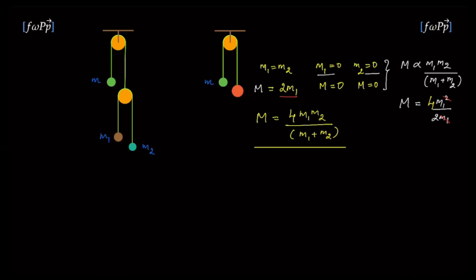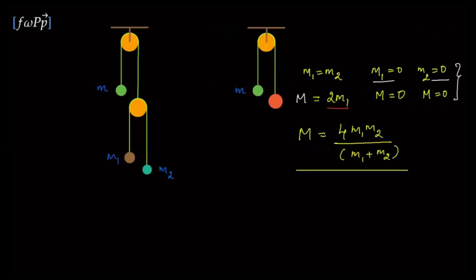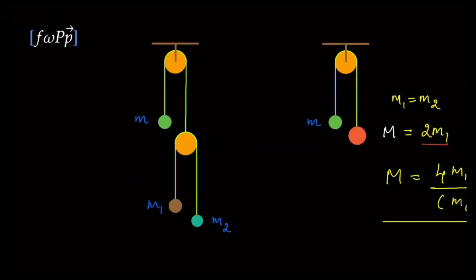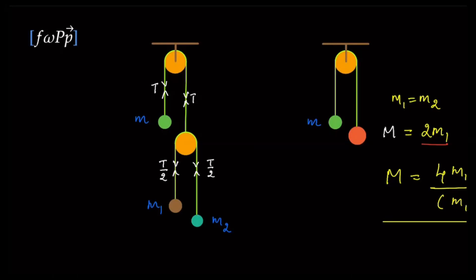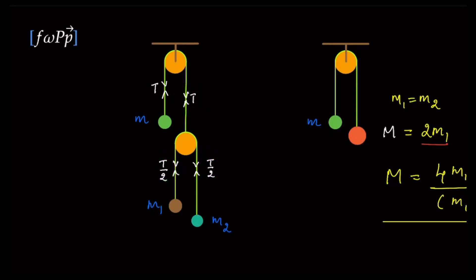We are now going to solve it by writing the F=ma equations. Let's examine this pulley. There is a tension t in the string, the same tension on the other side. This pulley being massless, the net force on it must equal 0. Therefore there must be a tension downwards such that t/2 + t/2 equals t — net force on the pulley is 0. Let's take forces in the upward direction as positive y. The acceleration of mass m is going to be a in the upward direction.